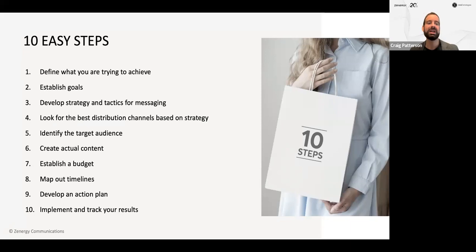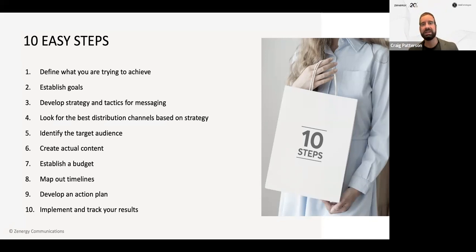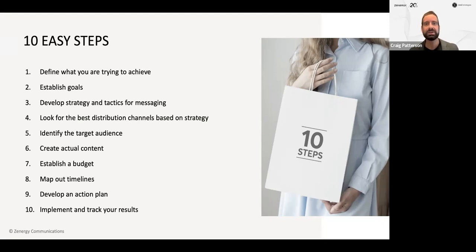Step number three: develop a strategy and tactics for messaging. You look for your best distribution channels based on the strategy — that could be email, social media, TV, newspaper. Step four: identify your target audience. Are you looking for people interested in fitness? Are you looking for pet owners? In the case of the advertisement I was just reviewing, it was for a multimedia film studio. I saw some glaring things I would change within that copy — I just saw room for improvement.